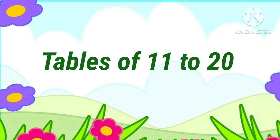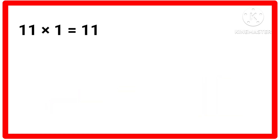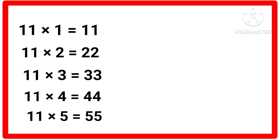So let's start. Table of 11. 11 ones are 11, 11 twos are 22, 11 threes are 33, 11 fours are 44, 11 fives are 55.